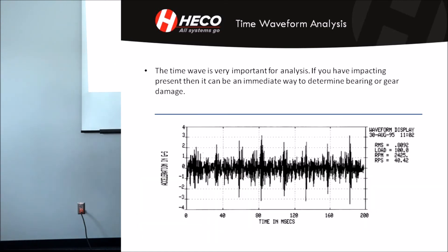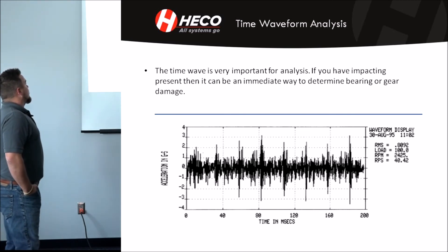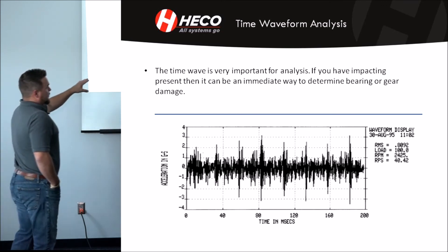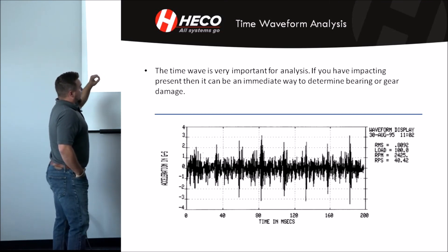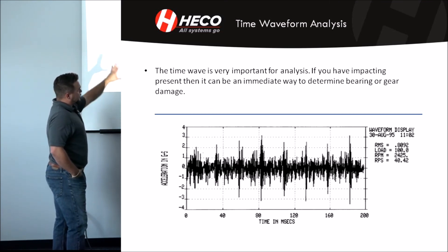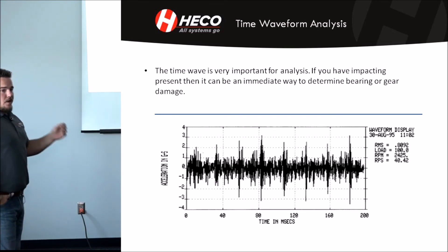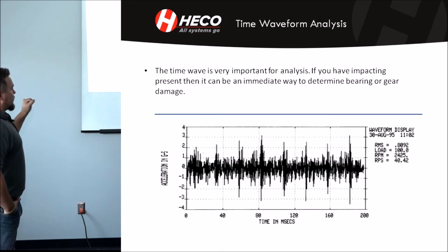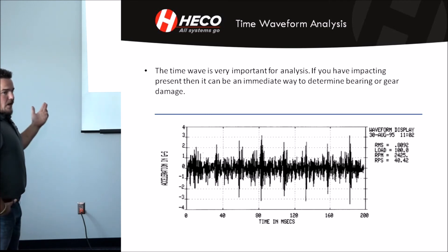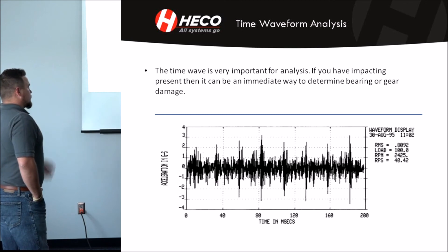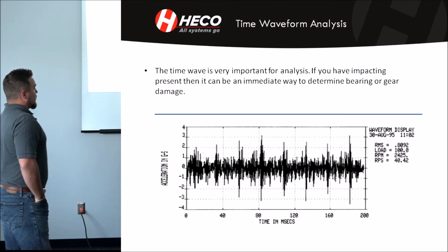The time wave is very important for analysis. If you have impacting present, it can be an immediate way to determine bearing or gear damage. This is an example of a time wave with impact in it — these are spurts of energy and ring-down. If you have a bearing with damage, every time the ball passes that damage you're going to get a high spurt of energy — an impact. The same thing applies to a gear: if you have a broken tooth or wear, when it passes the damaged spot it'll do the same thing, so it's easy to see that you have an issue when you get a time wave like that.